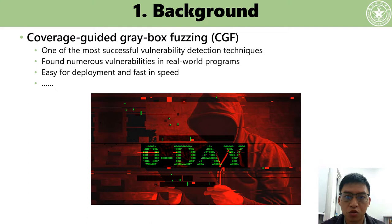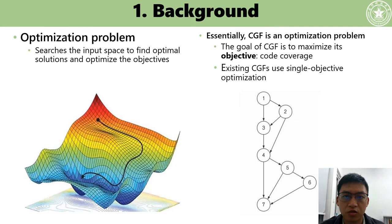My presentation today is divided into five parts. CGF is one of the most successful vulnerability detection techniques. It has found numerous vulnerabilities in real-world programs, and is easy to deploy with high speed. Essentially, CGF is an optimization problem. The goal of CGF is to maximize its objective, which is called coverage.